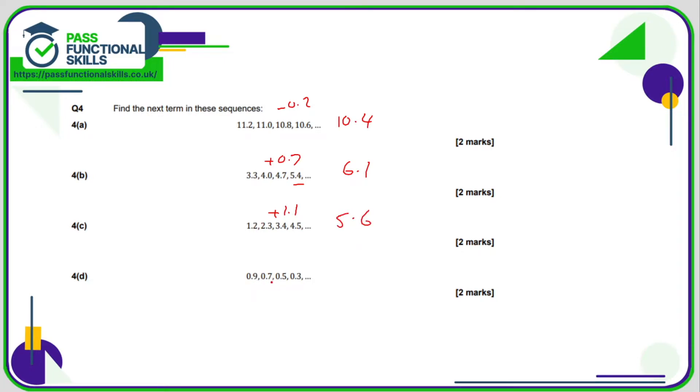0.9, 0.7, 0.5, 0.5, 0.3, we're going down by 0.2, so if we subtract 0.2 from 0.3, we're going to get 0.1.